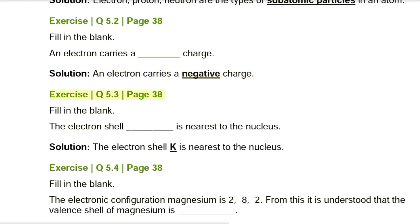Exercise Q5.3, page 38. Fill in the blank: The electron shell _______ is nearest to the nucleus. Solution: The electron shell K is nearest to the nucleus.